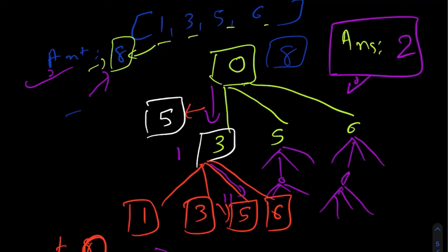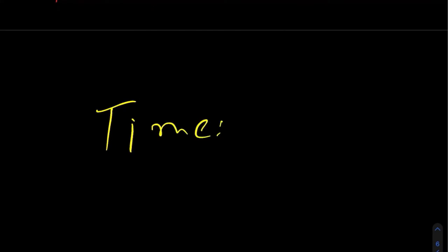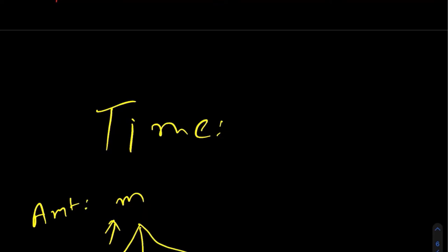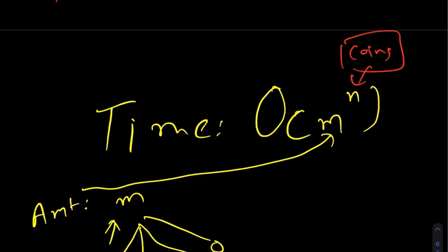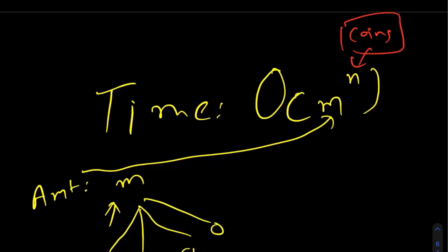This solution works and we do get the answer, but the issue is the time complexity is so bad it's not even polynomial — it's exponential. If we consider the amount as M, at every step we keep making multiple decisions based on the number of coins N. So the time complexity is O(M^N), where M is the given amount and N is the number of coins. This is such a bad time complexity that even NASA couldn't run it beyond certain values. We need a better approach.